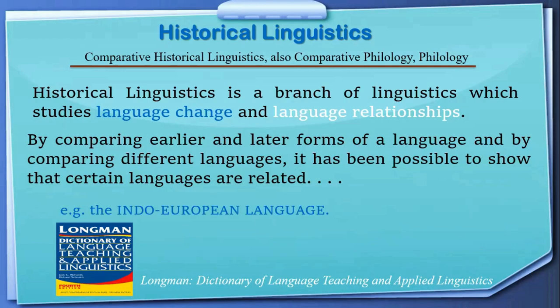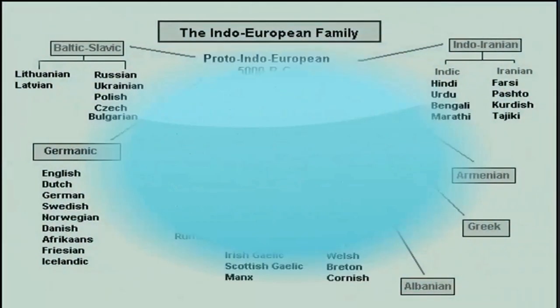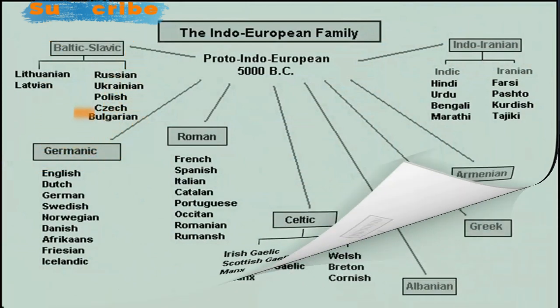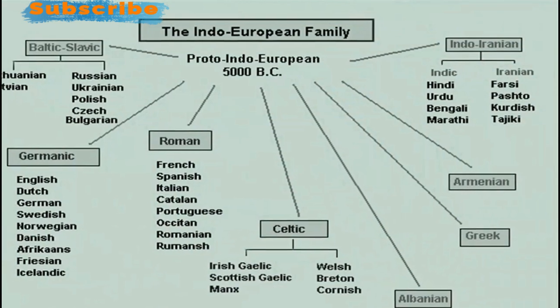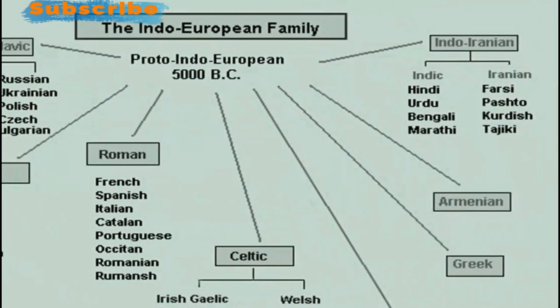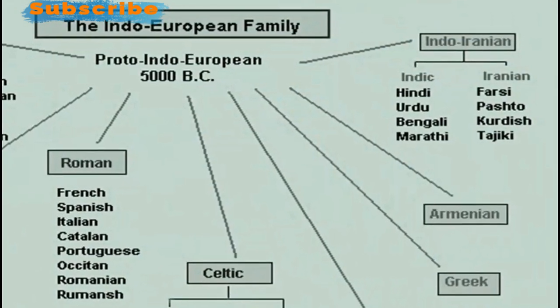Here, the example of language change and language relations is the Indo-European languages. Here is the chart of the Indo-European family. Proto-Indo-European, 5000 BC, is the old language. From that, you see Indo-Iranian languages, which has two branches basically.